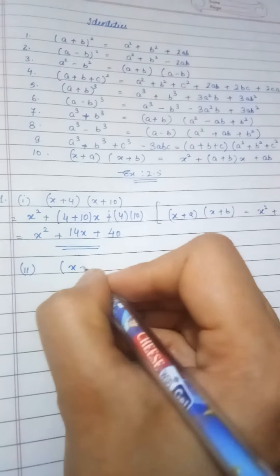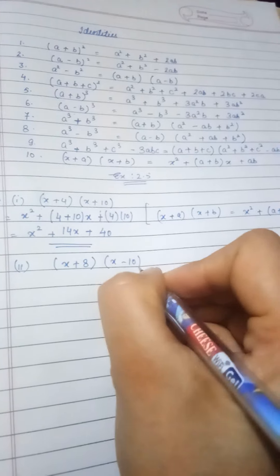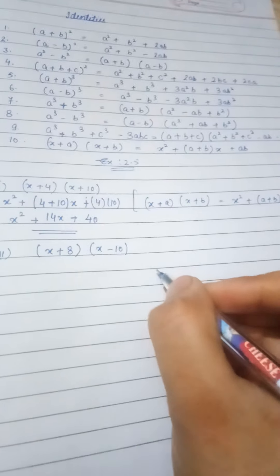Then we have x squared plus 14x plus 40. That's all. Let us do the second sum.